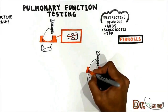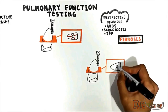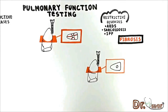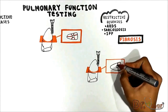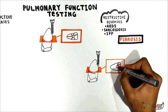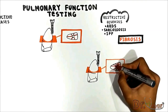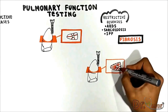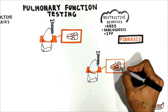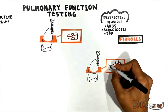In pulmonary fibrosis the main problem is in the parenchyma of the lung — it becomes fibrotic, meaning the elastic fibers increase. When this happens, elastic recoil of the lung increases and this keeps the lung deflated. As a consequence, all lung volumes decrease.